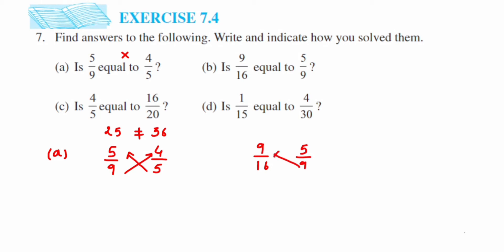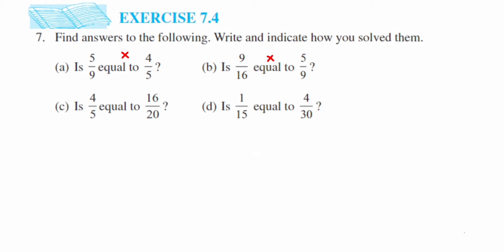For the next problem — 9/16 and 5/9 — by cross multiplication: 9×9 is 81 and 16×5 is 80. Again they are not equal; 81 is not equal to 80. So in the second question also, 9/16 and 5/9 are not equal.